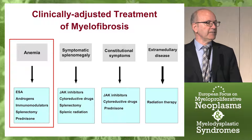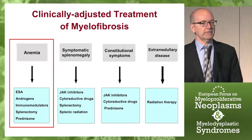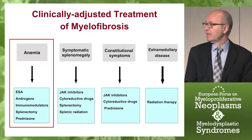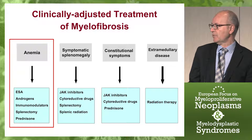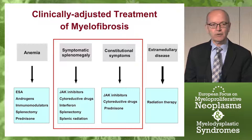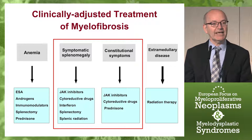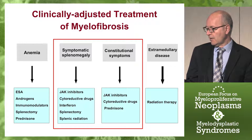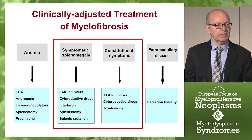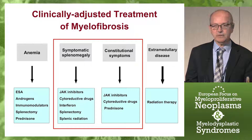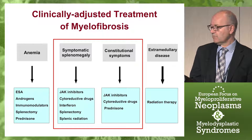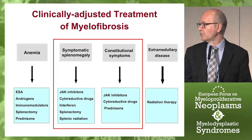Which would be the treatment? In myelofibrosis, in the absence of criteria for transplantation, it is symptom-adjusted therapy. In the case of anemia, we have different drugs or procedures: erythropoiesis-stimulating agents, androgens, immunomodulators, splenectomy, or prednisone. For patients with symptomatic splenomegaly or constitutional symptoms, we have nowadays the JAK inhibitor — the only approved drug is ruxolitinib. Or we can use cytoreductive drugs such as hydroxyurea or interferon, splenectomy, or splenic radiation. For patients with extramedullary disease, radiation therapy is always an option.